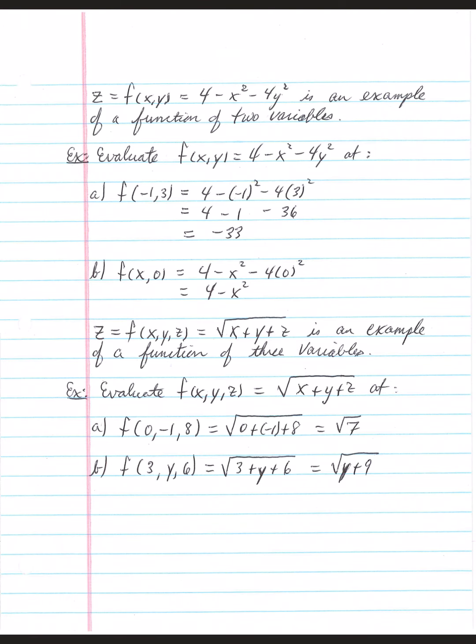A function of three variables would be something like f of x, y, z, where it is defined as the square root of x plus y plus z. Let's calculate and evaluate this function for the point 0, negative 1, 8.